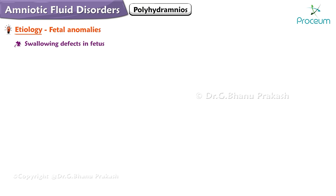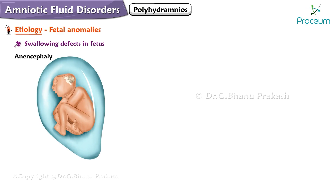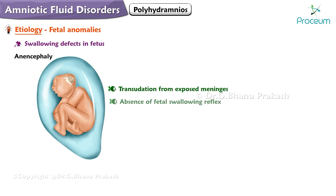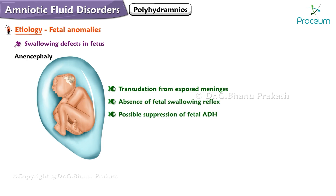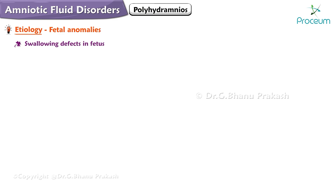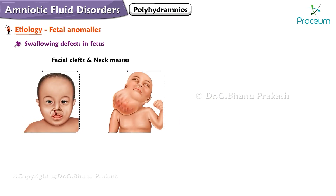Let's look at swallowing defects in the fetus. One such defect is anencephaly. The features of this include transudation from the exposed meninges, absence of fetal swallowing reflex, and possible suppression of fetal antidiuretic hormone leading to excessive urination. Facial clefts and neck masses can also interfere with normal swallowing.